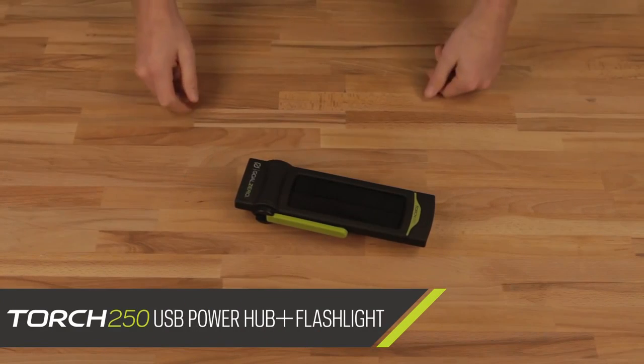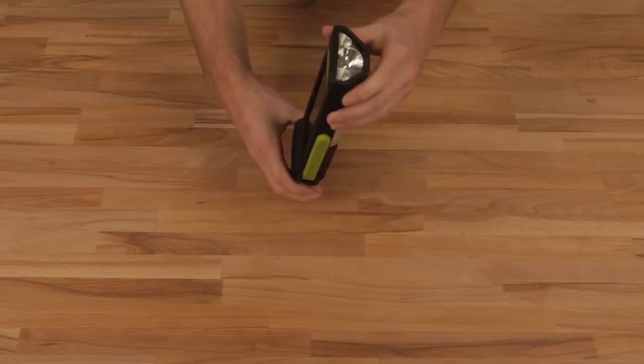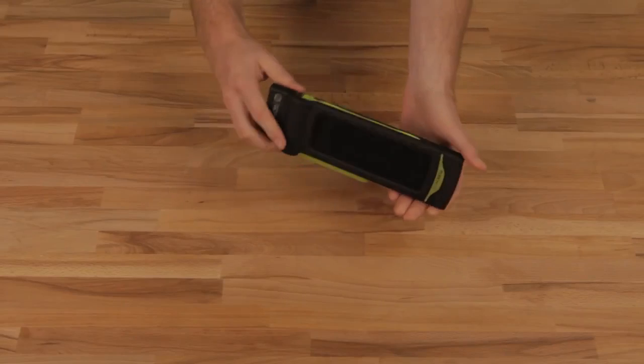Here's everything that comes in the box with the Torch 250. It's basically just the Torch 250. Everything comes attached on this one.